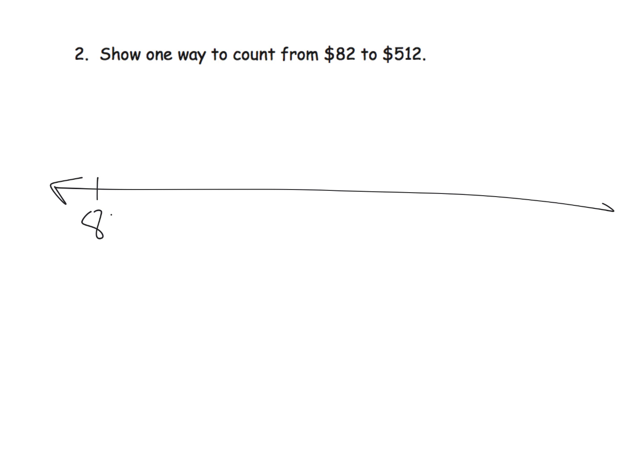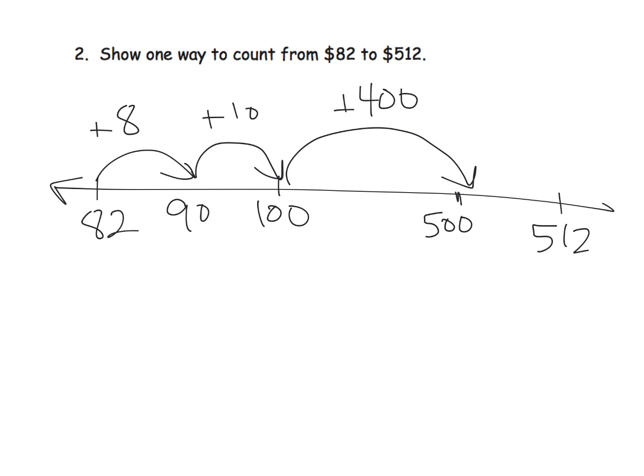So 82 to 512. We could say, well, let's go up eight, that gets us to 90—there's a nice landmark number. We can go up ten, that gets us to 100. We can go up 400, that puts us at 500.